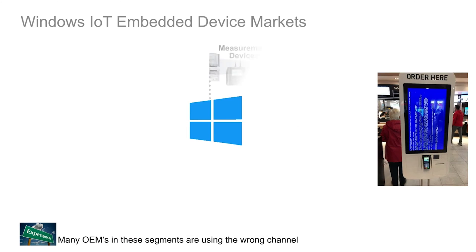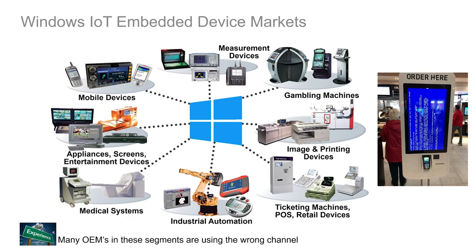In the IoT channel — which is for Internet of Things — it used to be called the embedded OEM channel, it's now the OEM IoT channel. I still use the word 'embedded' because a lot of people are still familiar with that. For Windows 10 it's Windows 10 IoT, and it's specifically for all these industries that you see here. If you're building some type of appliance where it boots Windows and then runs an application to do a specific function, then you would qualify.